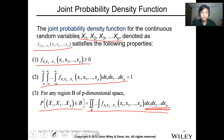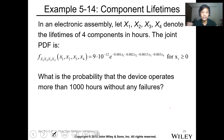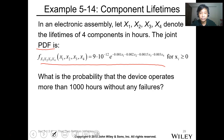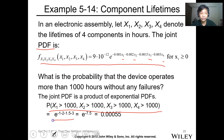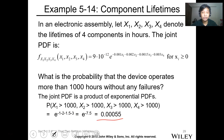Example: In an electronic assembly, let x1, x2, x3, x4 denote the lifetimes of four components in hours. The joint PDF is 9 times 10 to the negative 12, with four variables. We want the probability that the device operates more than 1000 hours without any failure, meaning all probabilities are greater than 1000. Upon integration, the constant cancels and we get e to the negative 7.5, which gives 0.00055.